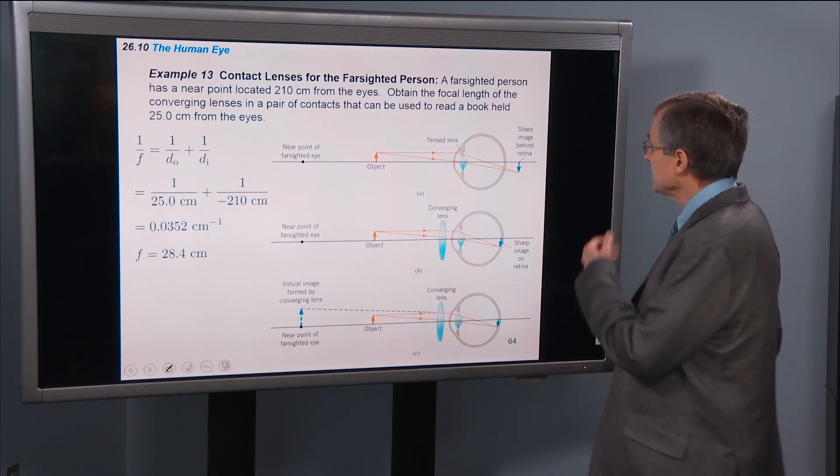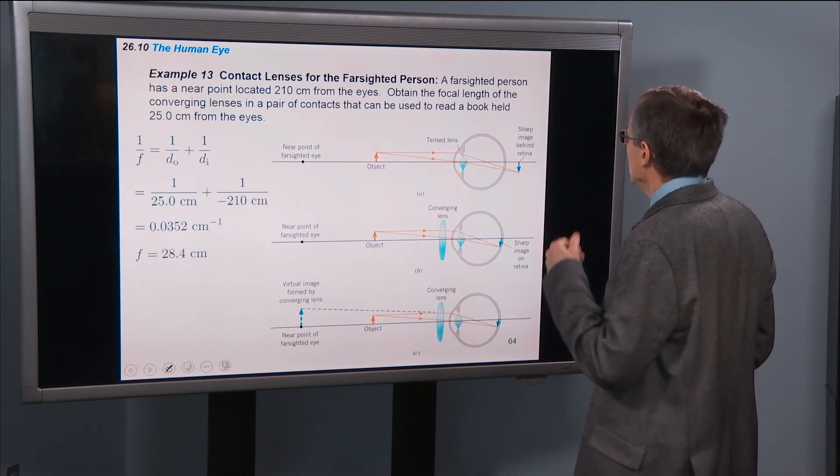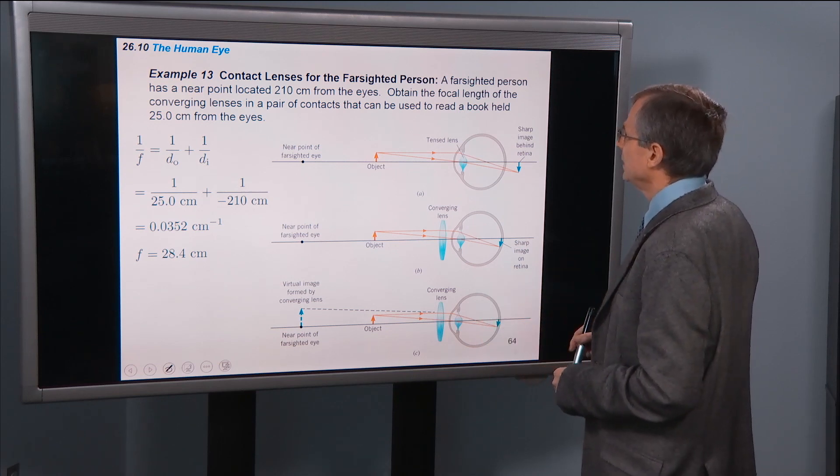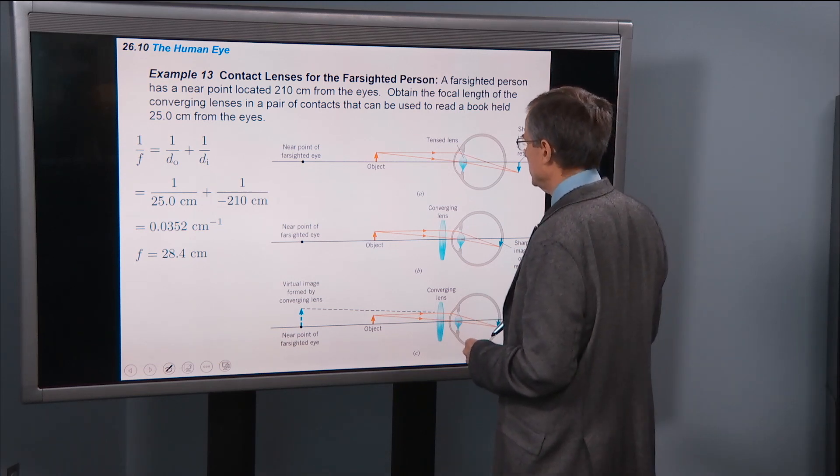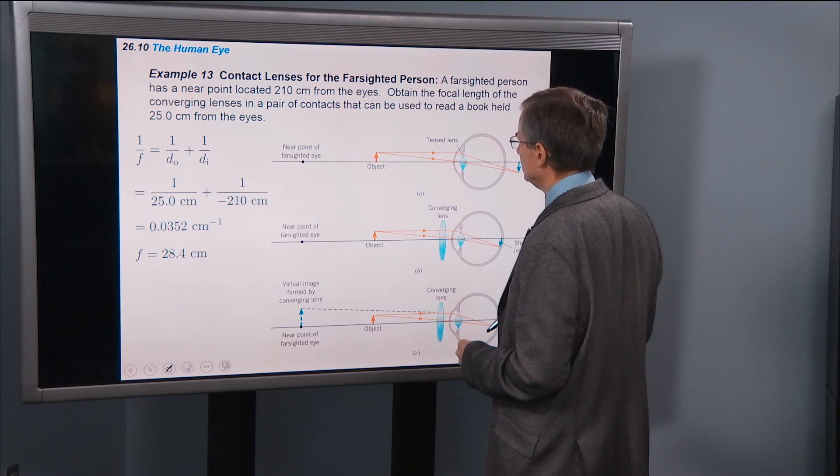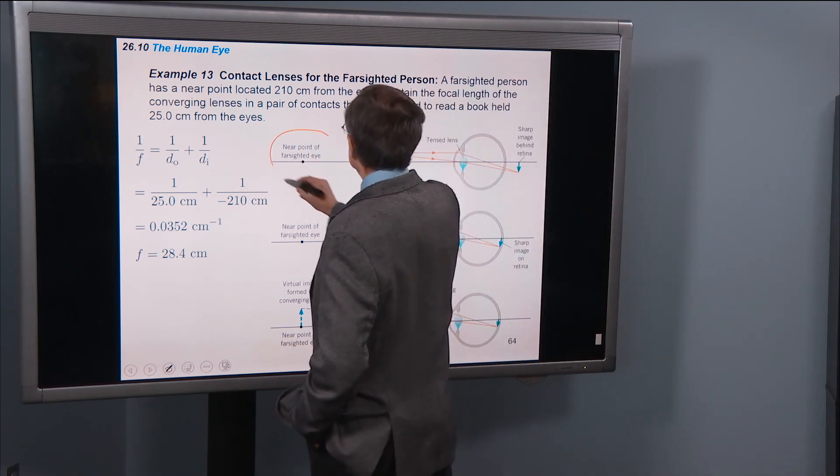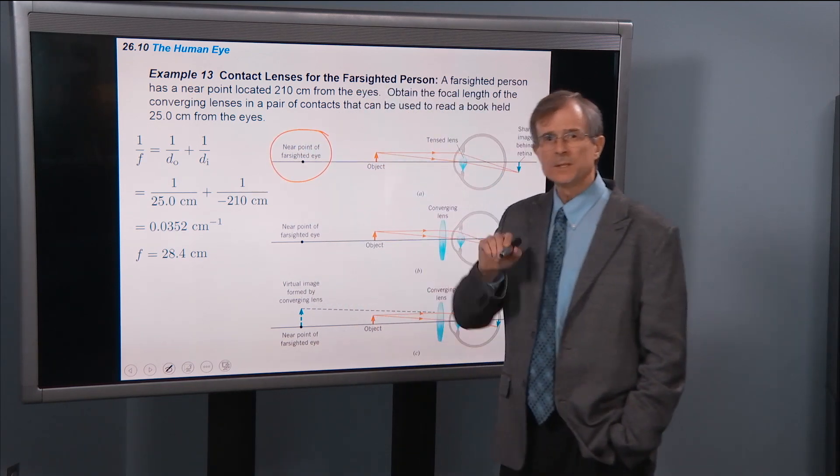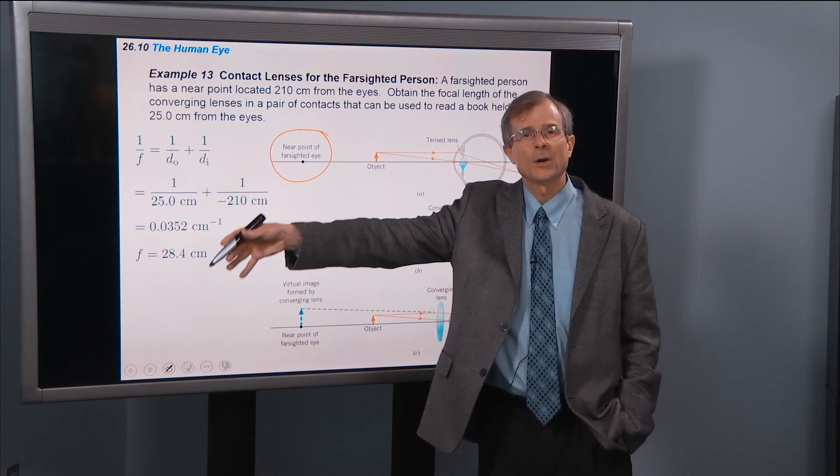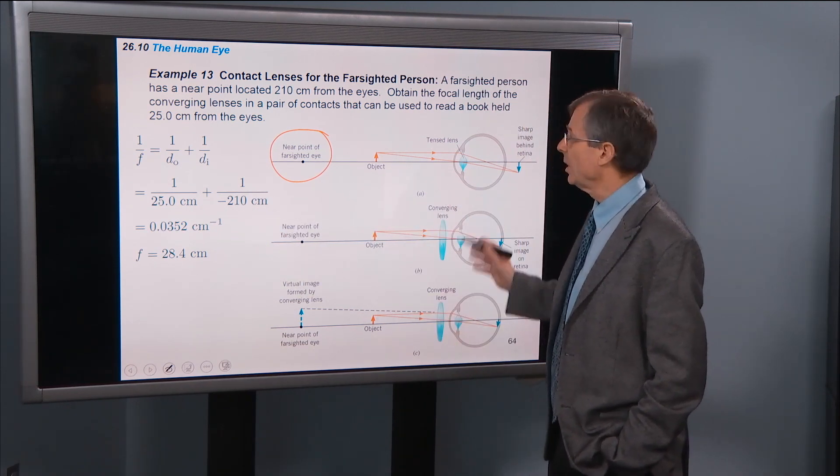Alright, contact lenses for the farsighted person. So a farsighted person has a near point located at 210 centimeters from the eyes. So this farsighted person can see objects clearly that are far away, but can't see objects that are close.